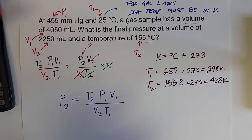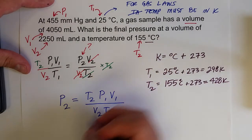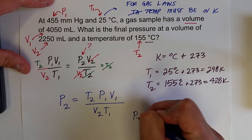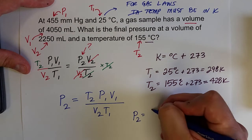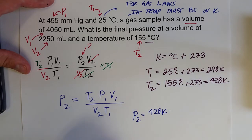And now we can plug this into our equation. All right, so we've got P2 equals T2, 428 Kelvin, times P1,